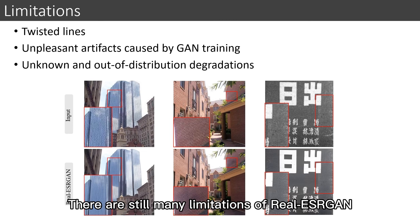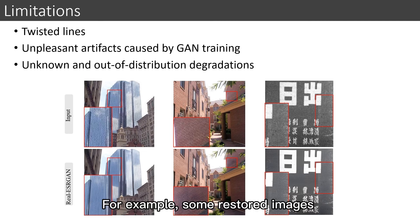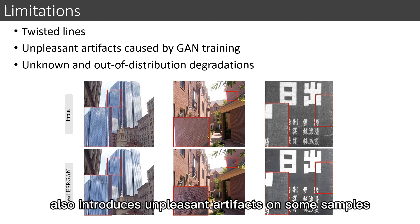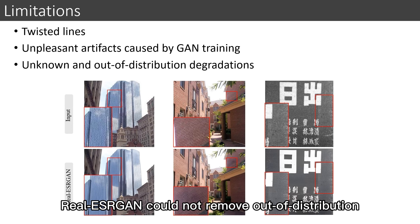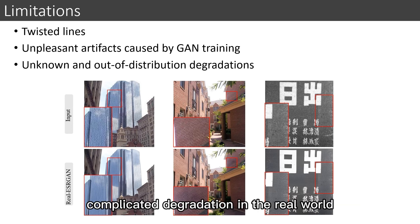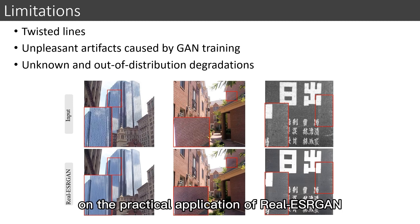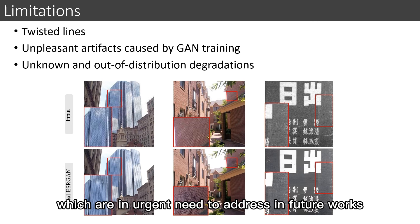There are still many limitations of Real-ESRGAN. For example, some restored images — especially building and indoor scenes — have twisted lines due to aliasing issues. GAN training also introduces unpleasant artifacts on some samples. Real-ESRGAN cannot remove out-of-distribution complicated degradations in the real world; even worse, it may amplify these artifacts. These drawbacks have a great impact on practical application and are an urgent need to address in future works.